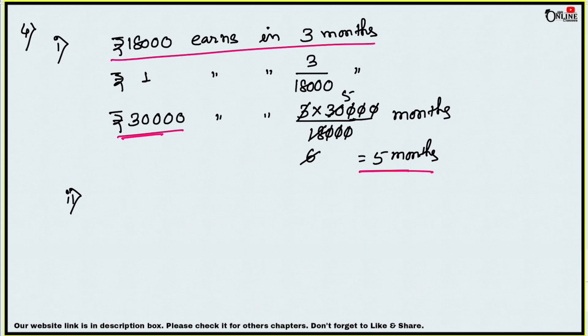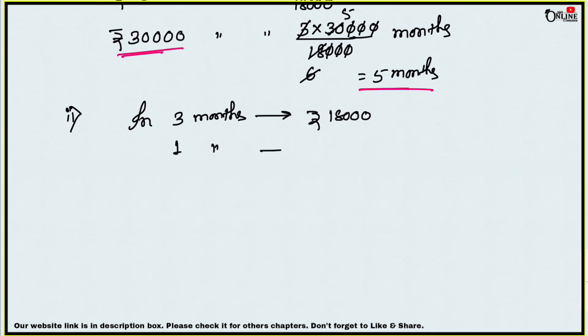Part two: How much money will he earn in seven months? In three months he earned 18,000 rupees. In one month he earned 18,000 by 3 rupees. In seven months he earned 18,000 by 3 into 7, which is 42,000 rupees. That is your answer.